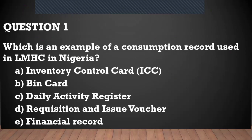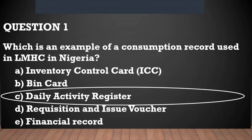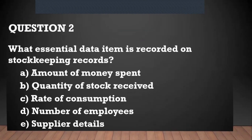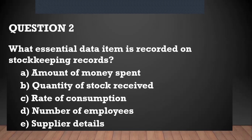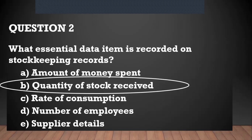The correct answer is the daily activity register. Question number two: what essential data item is recorded on stock keeping records? What you want to record on a stock keeping record is the quantity of stock you have received — so what you actually have that is usable.